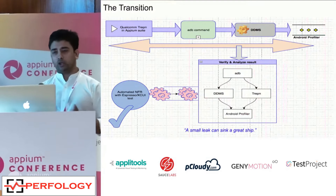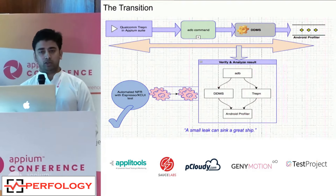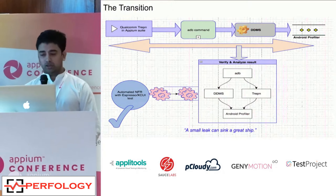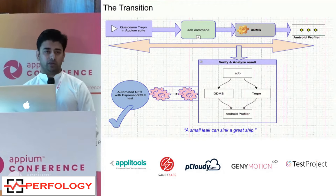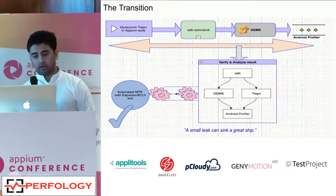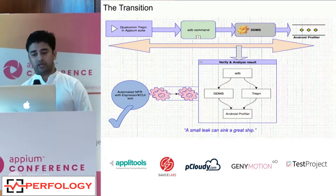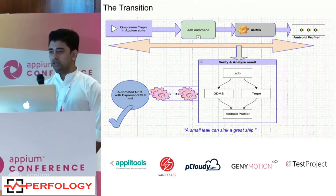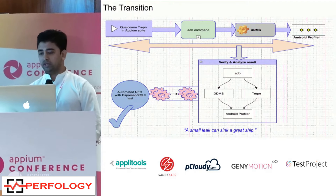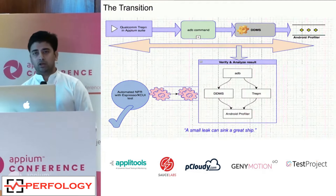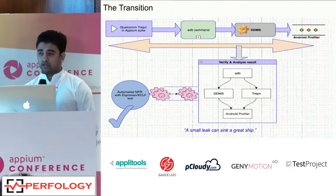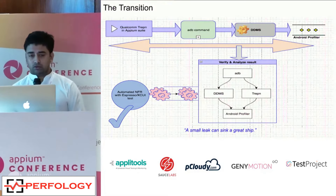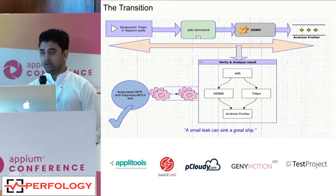We then tried DDMS from the Android SDK. It wasn't an automated solution, but reliability was quite high. We could profile a debug APK and run tests, but manual intervention with DDMS caused a delta of errors. We then moved to Android Profiler in Android Studio 3.0, which gave us visualized data for all matrices, but the app became sluggish when used with the profiler. So we couldn't rely on those matrices either. We needed a solution with no manual intervention.